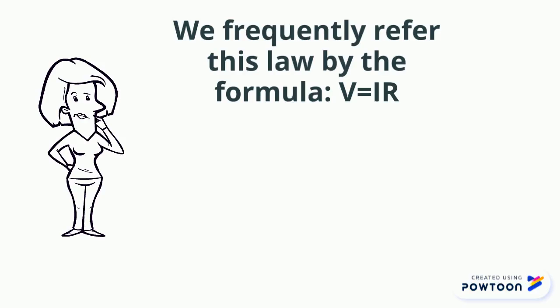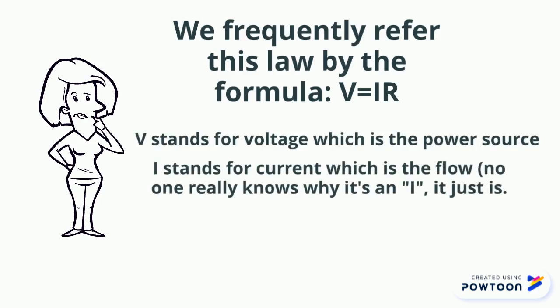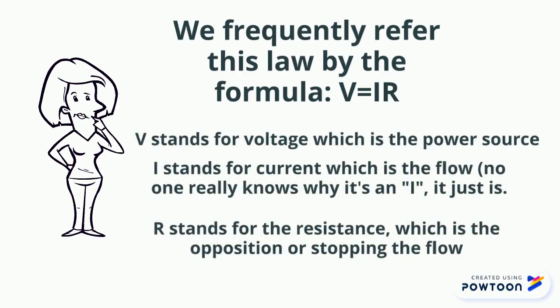This relationship can be described by the formula V equals IR, which basically tells us that the voltage is equal to the current times the resistance. So if one goes up, the other has to go down.